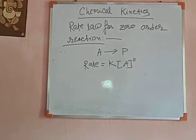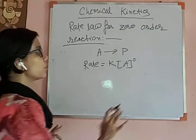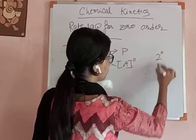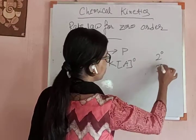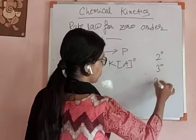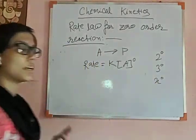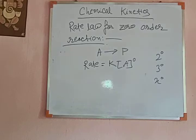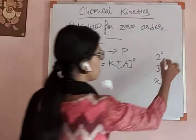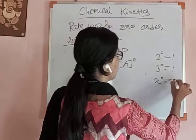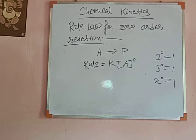Now according to mathematics, anything to the power of zero — suppose 2 to the power of zero, 3 to the power of zero, X to the power of zero — whatever you take, it is always equal to 1.